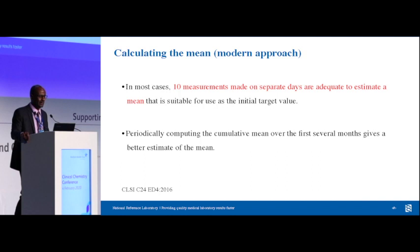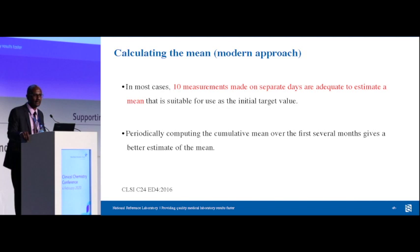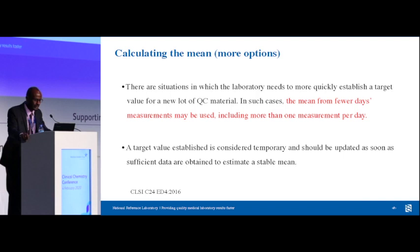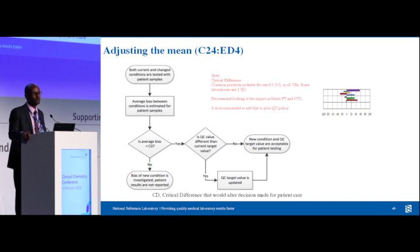The new way of running controls to calculate mean and SD, according to CLSI C24, is to do 10 measurements on several days — adequate to come up with a quick mean. They did not specify a minimum number of days since this is a guideline, not a standard. You can follow it, but slight deviations are okay. For analytes like hematology where the QC has a short life, you can use fewer days with more than one measurement per day.